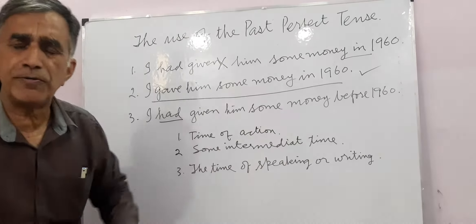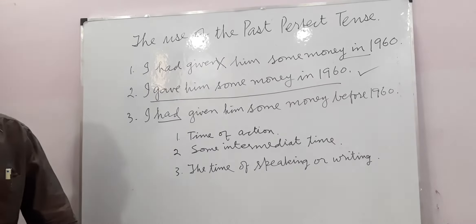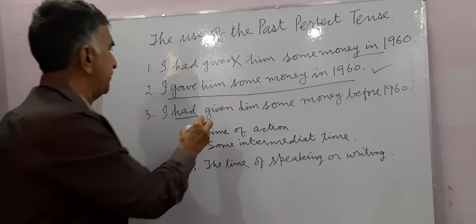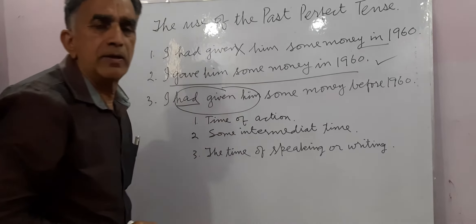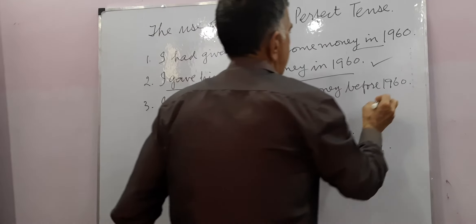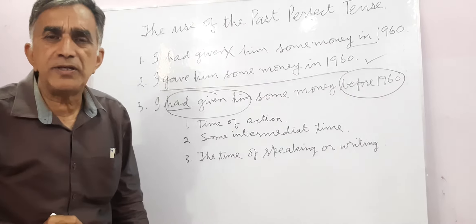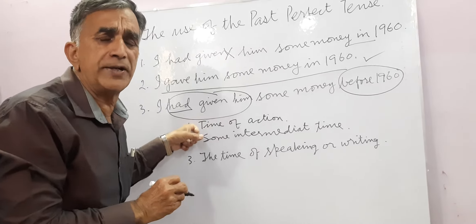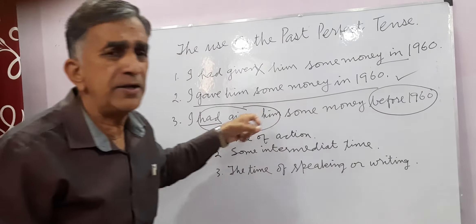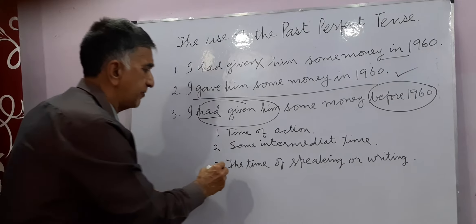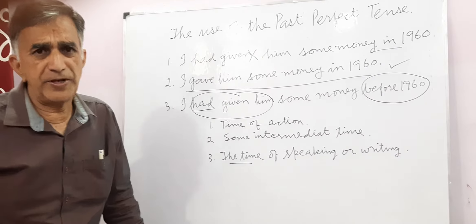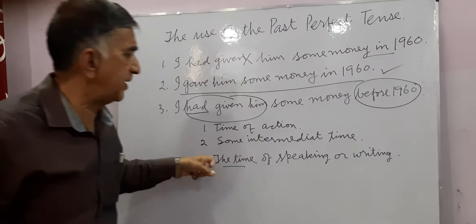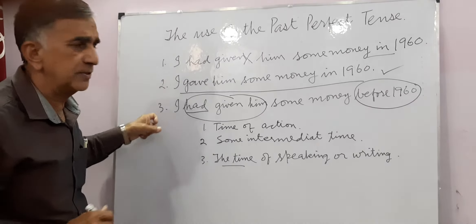I had given him some money before 1960. This is the most crucial sentence in this lecture. Now there are three times: time of giving money, some intermediate time — before 1960 is the intermediate time, because money was given to him before that time, so the act of giving happened before 1960 — and there is time of writing or speaking, now when I am giving this lecture.